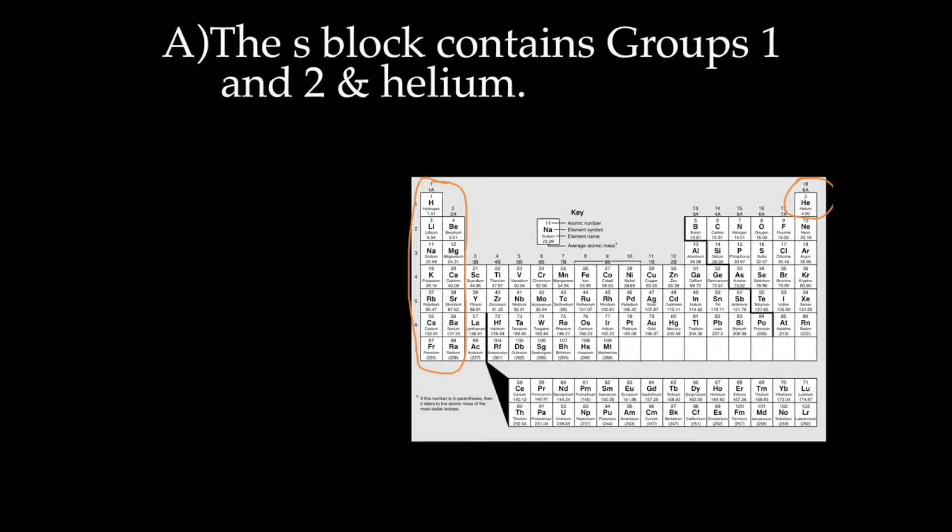The reason they're called the s-block is because of the valence electrons. If we look at hydrogen, hydrogen is 1s1. Lithium is 1s2, 2s1. Sodium is 1s2, 2s2, 2p6, 3s1.